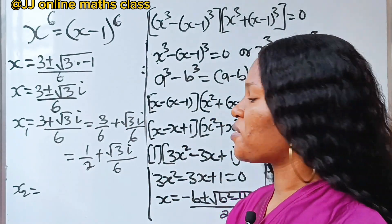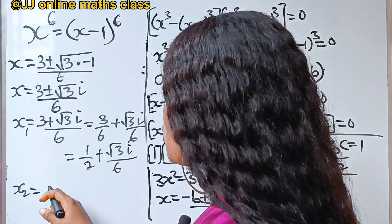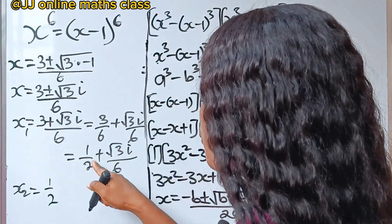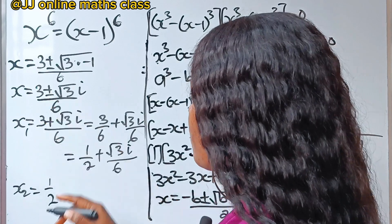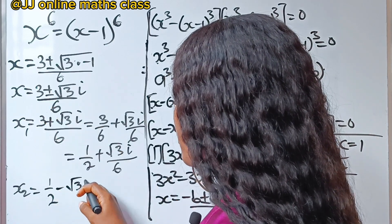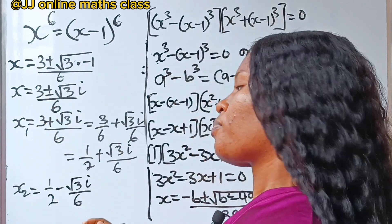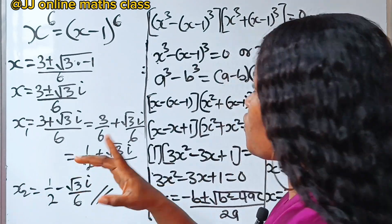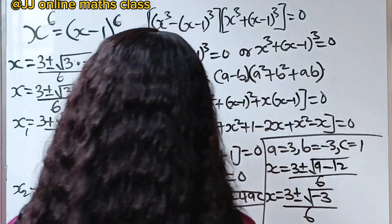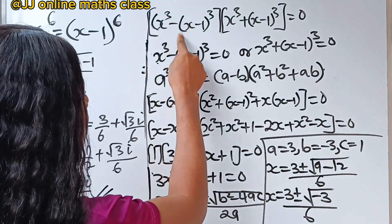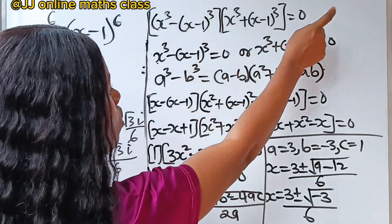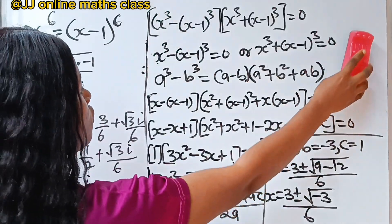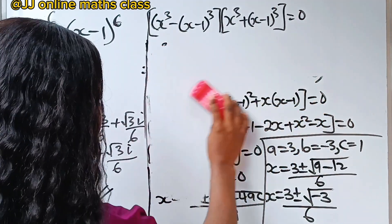So x one equals one half plus root three i over six, and x two equals one half minus root three i over six. That completes the first case, where x cubed minus x minus one cubed equals zero. Now for the second case, x cubed plus x minus one cubed equals zero.